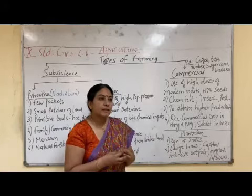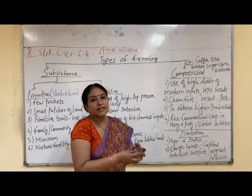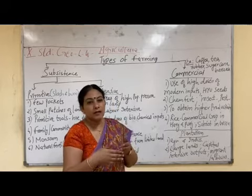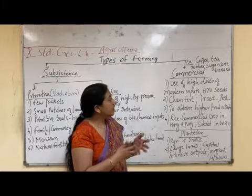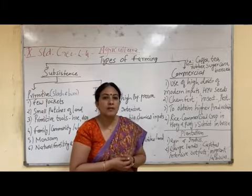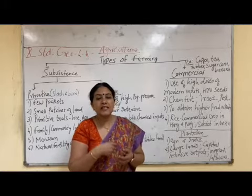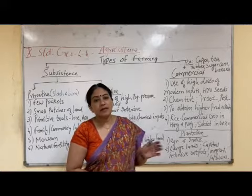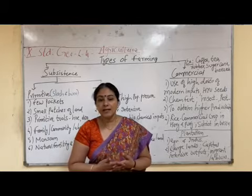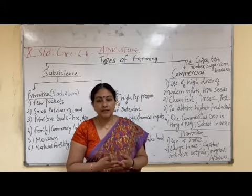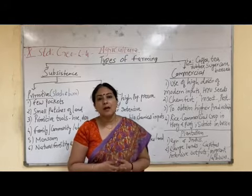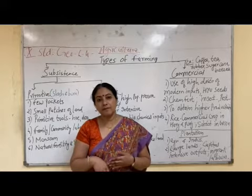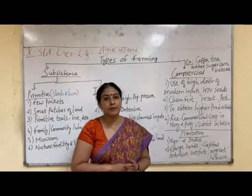Particular examples of commercial crops include those we do not use for eating directly, like cotton, sugar, coffee, and rubber. However, crops like rice can be commercial for some people and subsistence for others. The people of Punjab and Haryana grow more rice for selling, so rice is a commercial crop there. But people of Odisha and West Bengal eat more rice, so rice is a subsistence crop for them.